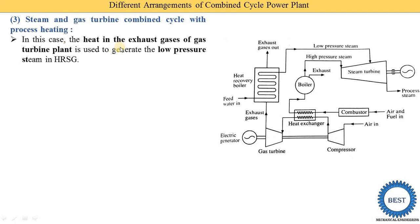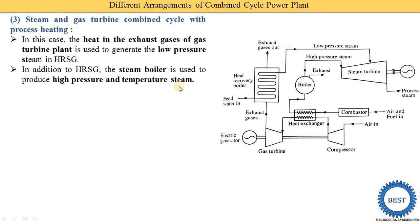In this arrangement, heat in the exhaust gases of the gas turbine plant is used to generate low pressure steam. Two types of steam are produced: low pressure steam and high pressure steam. The exhaust gas from the gas turbine is supplied to the HRSG, which produces low pressure steam. This low pressure steam is supplied to the low pressure stages of the steam turbine. In addition to the HRSG, a steam boiler is used to produce high pressure, high temperature steam.